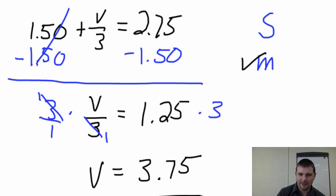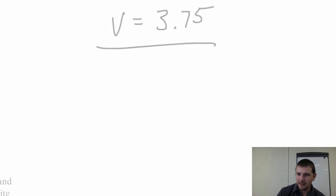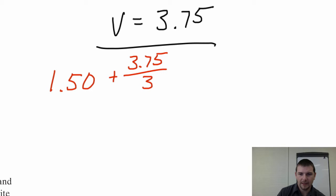But remember, one of the most important steps is often to simply plug back in your value for the variable in the original equation and check it. So let's do that. Change to a new color. Let's try red. So rewriting the entire original equation. $1.50 plus. But now instead of writing v, I'm going to plug in our value, the number we found to be equivalent to v. 3.75 over 3 equals.